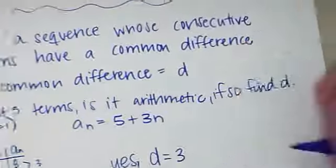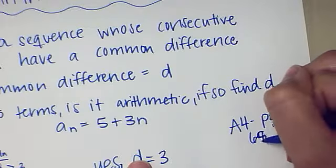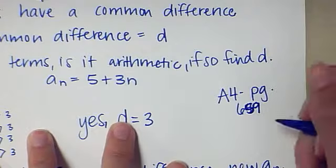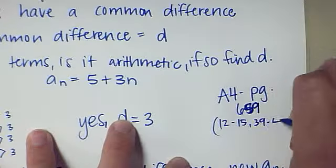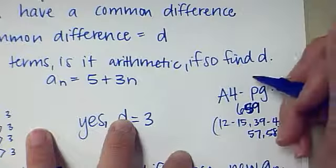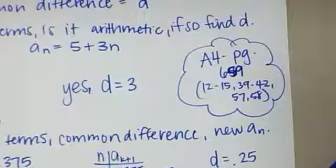The homework assignment for this is A4, and it's page 659. And that's numbers 12 to 15, 39 to 42, 57, and 58. And that's just a good variety of all of these things using that common difference. Good luck, and let me know if you have questions.